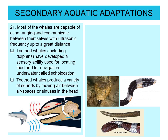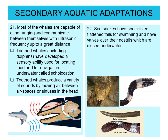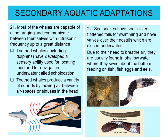Toothed whales produce a variety of sounds by moving air between air spaces or sinuses in the head. Sea snakes have a specialized flattened tail for swimming and have valves over their nostrils which close underwater. In normal snakes the tail is pointed, whereas in sea snakes the tail is flattened, which is helpful for swimming. Due to their need to breathe air, they are usually found in shallow water where they swim near the bottom, feeding on fish, fish eggs, and eels.